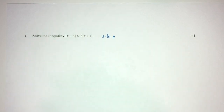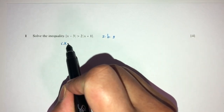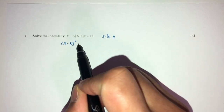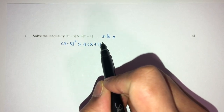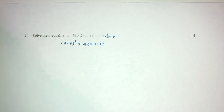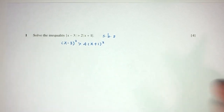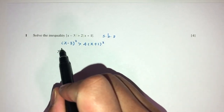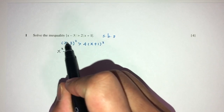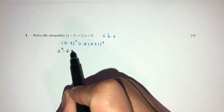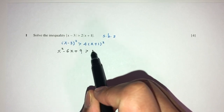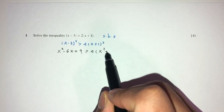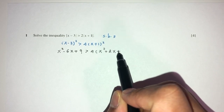Let's see what happens. When you square both sides, the modulus will go away. So you will have (x minus 3) squared, more than 2 squared which is 4, and (x plus 1) squared. Now we have to expand the brackets. Here we will have x squared minus 6x plus 9 on one side, and on the other x squared plus 2x plus 1.